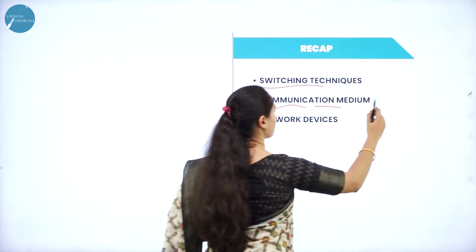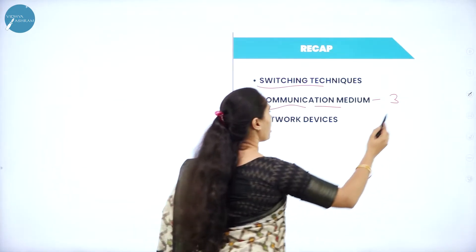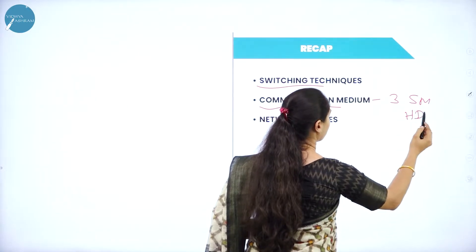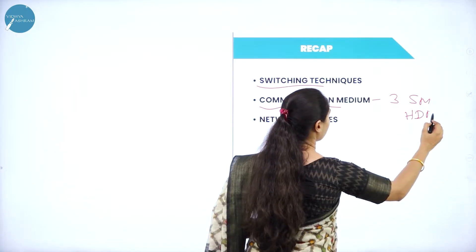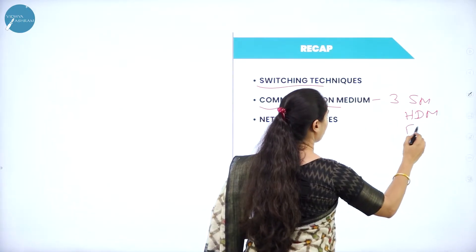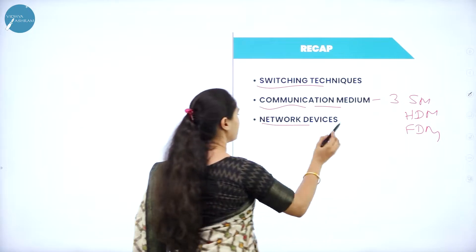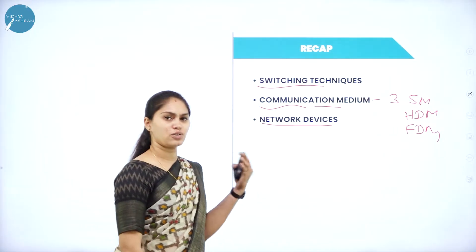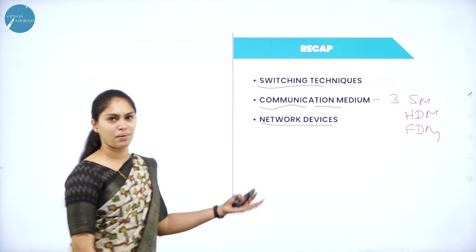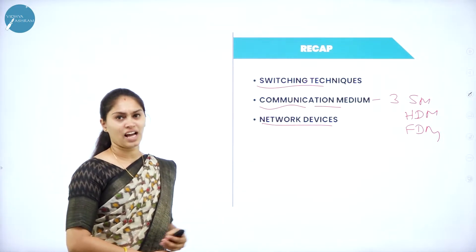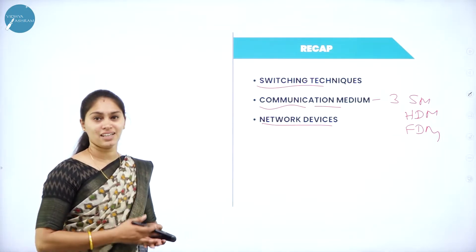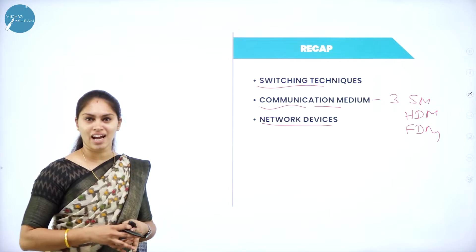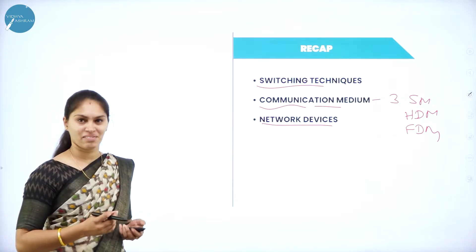In communication mediums, we have three kinds: simplex mode, half duplex mode, and full duplex mode. We also learned about network devices, including hub, repeaters, bridge, gateway, and modulators — all of which were discussed in the previous session.